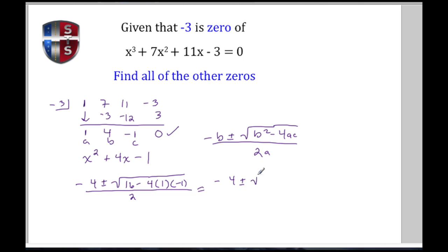I continue to simplify. -4 ± ... here I have 16, I have -4 times -1 which gives me a positive 4 because negative times negative is positive, and I continue to divide by 2.